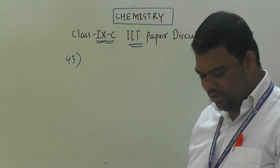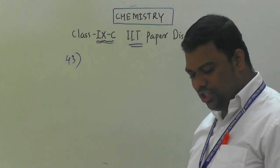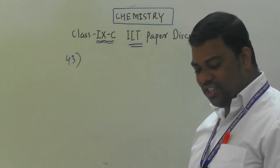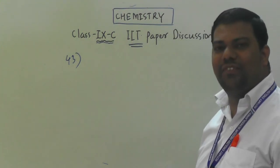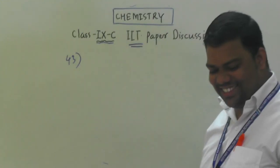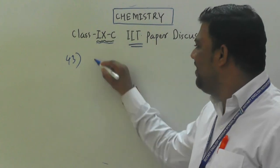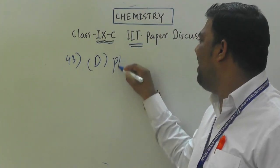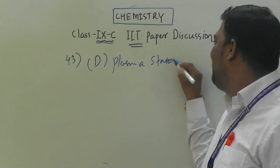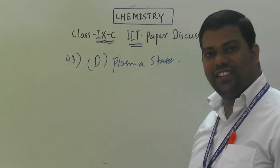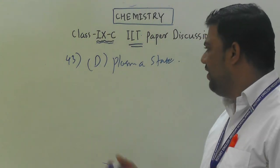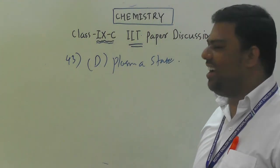Question number 43: the state of matter which consists of super energetic particles in the form of ionized gas is called plasma — option D. This is covered in NCERT if studied correctly.